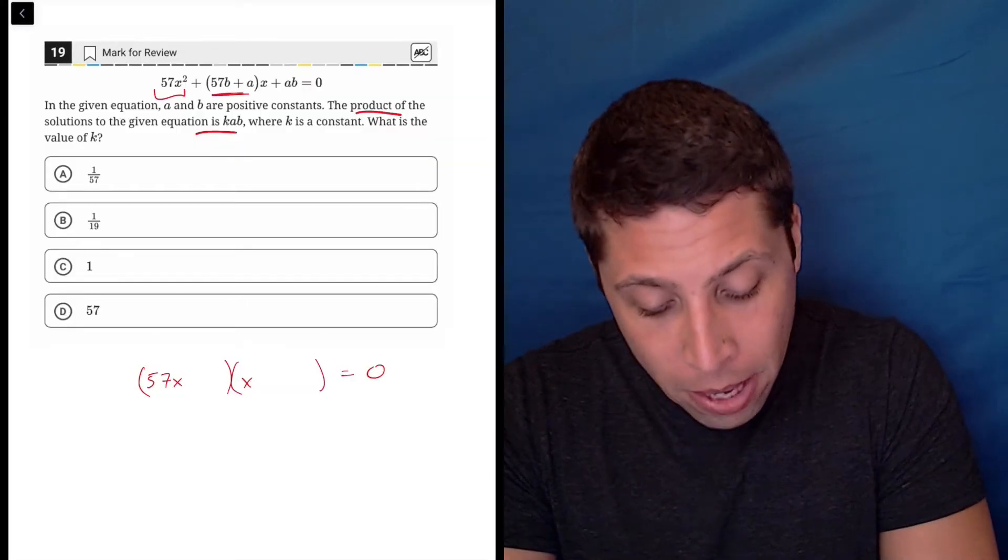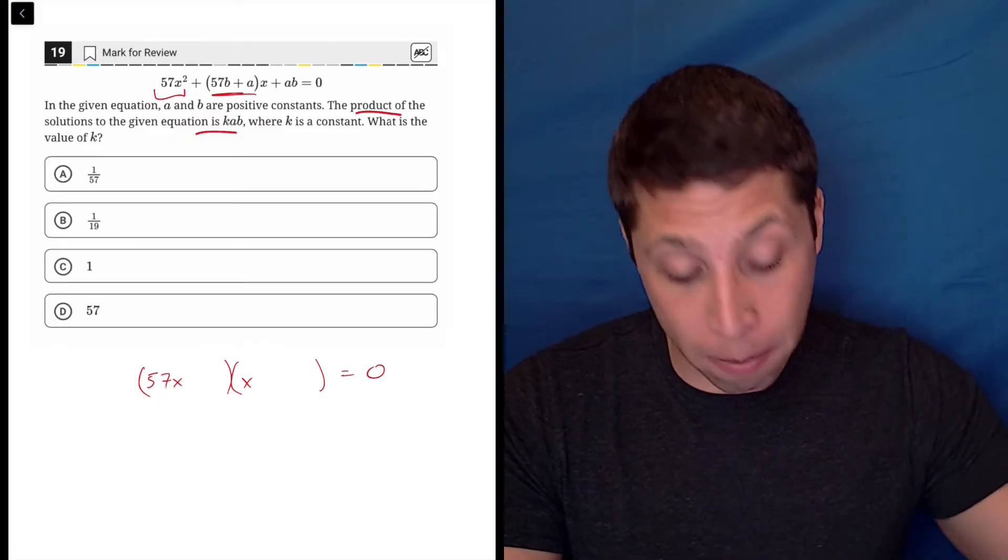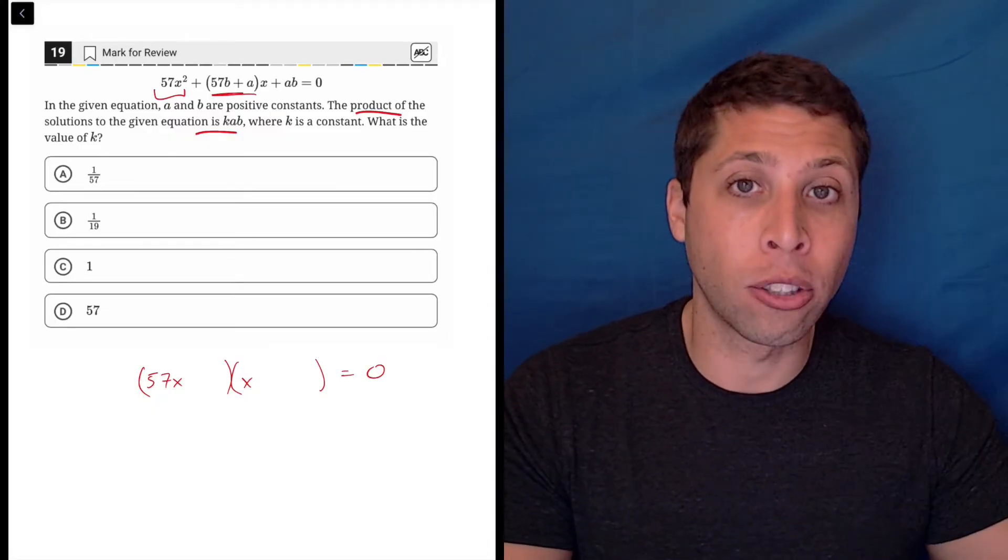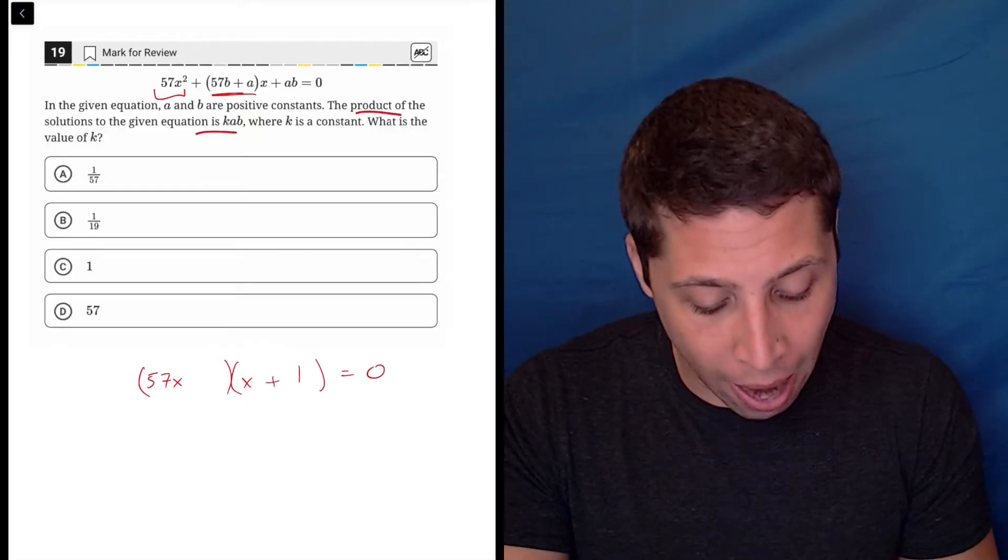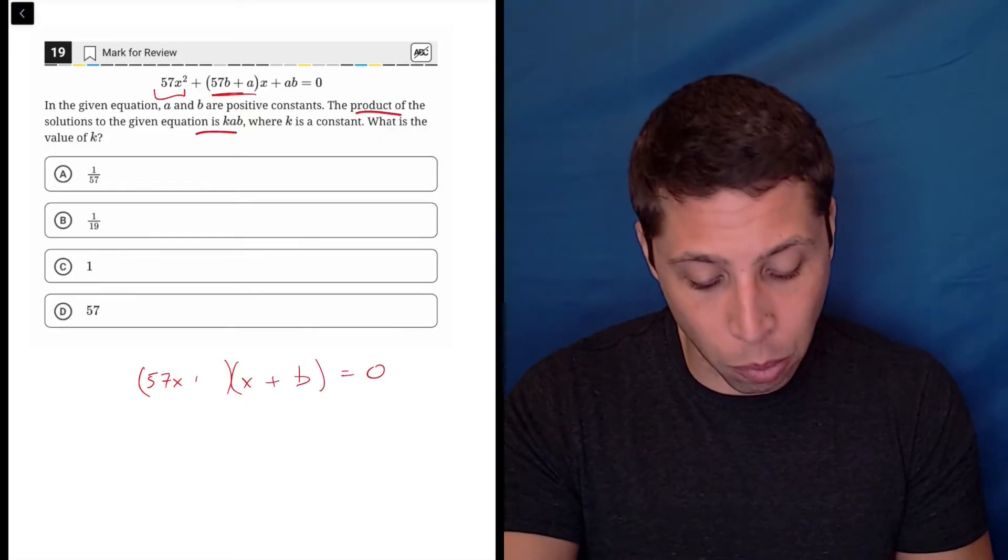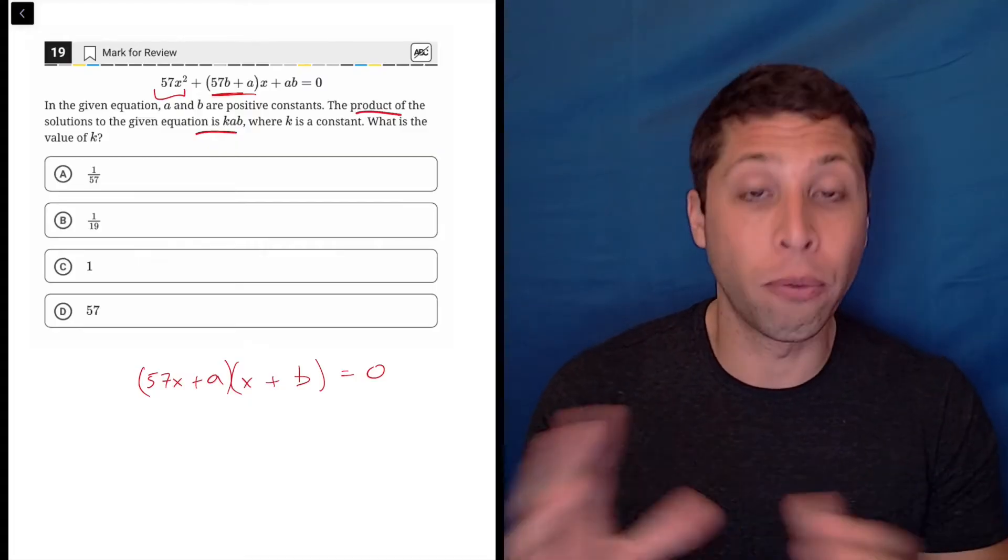And then because of the middle, where it's 57 is multiplied by b, I know that I need to construct this in a way where the b could be multiplied by the 57. So I have to put it in the second one, because if it's in the first one, it wouldn't multiply, right? Think about how you would foil this.